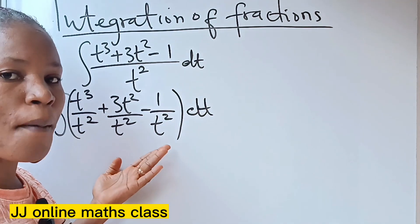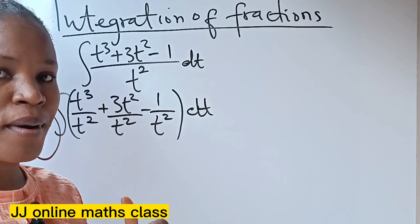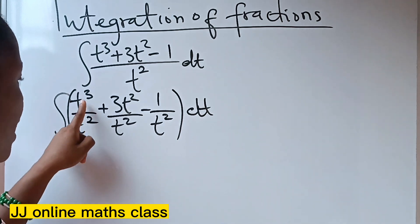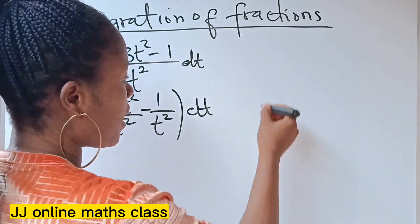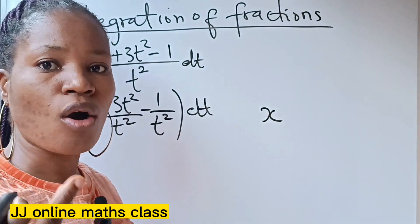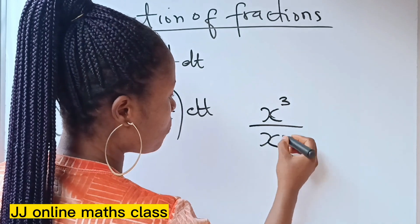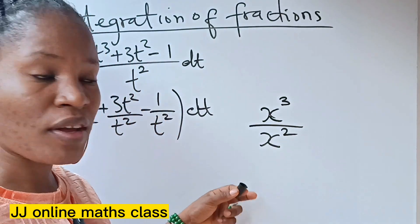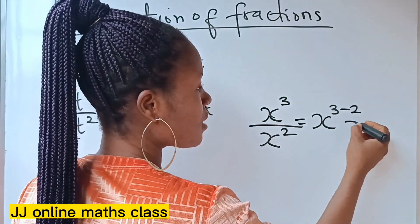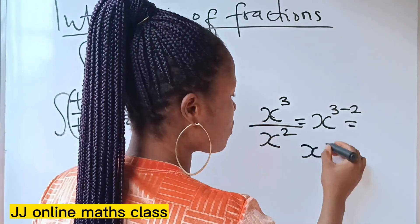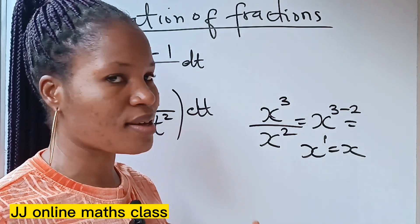Now we are going to go back to indices. What does indices say about two numbers of the same base that are dividing each other? Indices say that if you have two numbers of the same base — for example, x to the power of 3 divided by x to the power of 2 — you pick one of the bases, which is x, and you subtract the powers. We get x to the power of 1, which is also equal to x. Just pick one of the bases and subtract the powers, as easy as that.